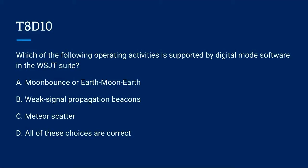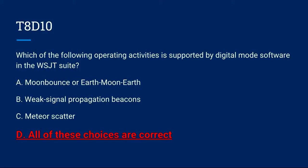T8D10: Which of the following operating activities is supported by digital mode software in the WSJT suite? A. Moon bounce, or Earth-Moon-Earth. B. Weak signal propagation beacons. C. Meteor scatter. Or D. All of these choices are correct. The correct answer is D: all of these choices are correct.